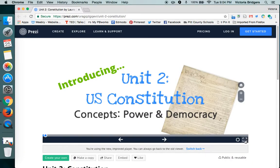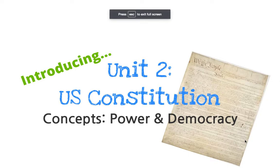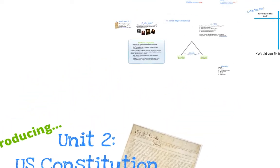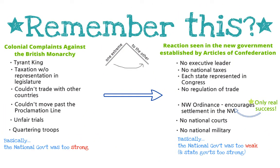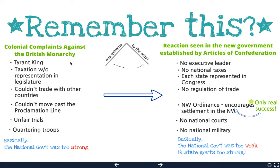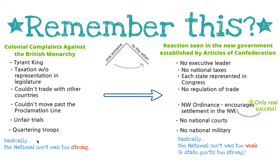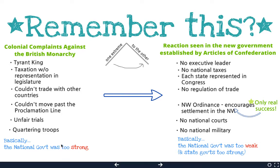Today's lesson, we are going to focus on one of the greatest stories in American history — how the United States Constitution was started. First, we have to recap: we had all of these complaints against the British monarchy, and overwhelmingly the national government was way too strong. That resulted in the colonists going from one extreme to the other — like a pendulum — to a completely really weak government.